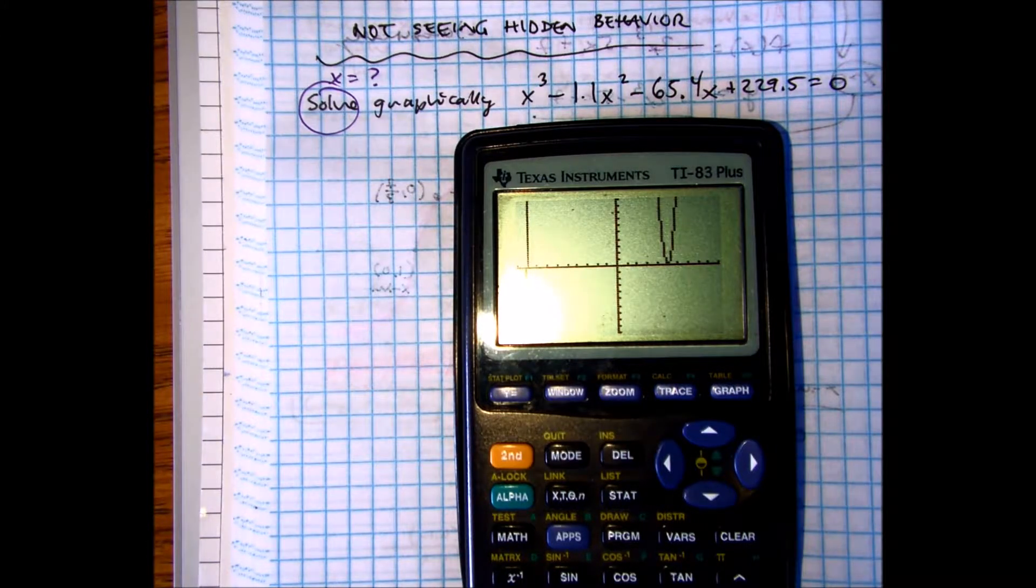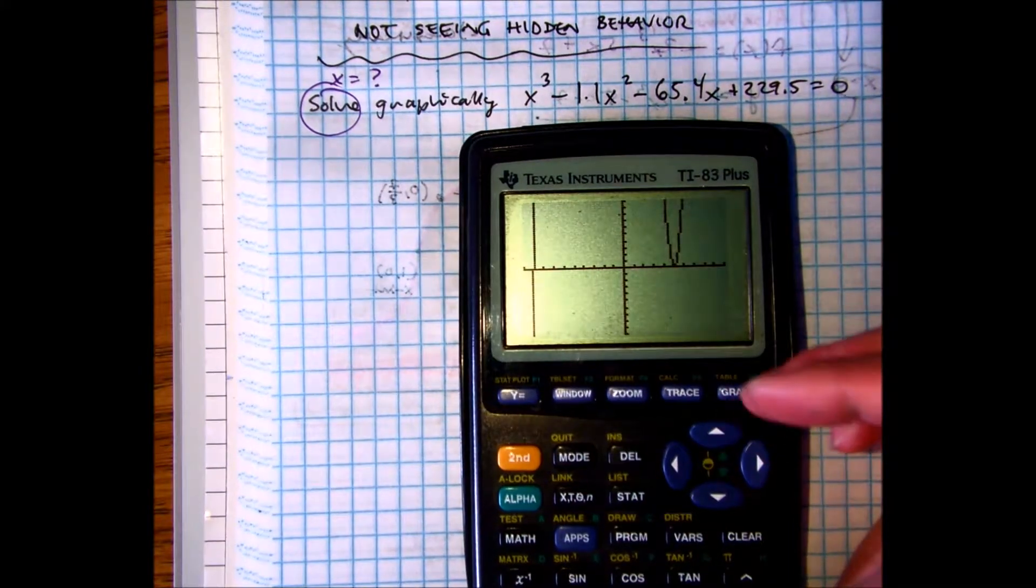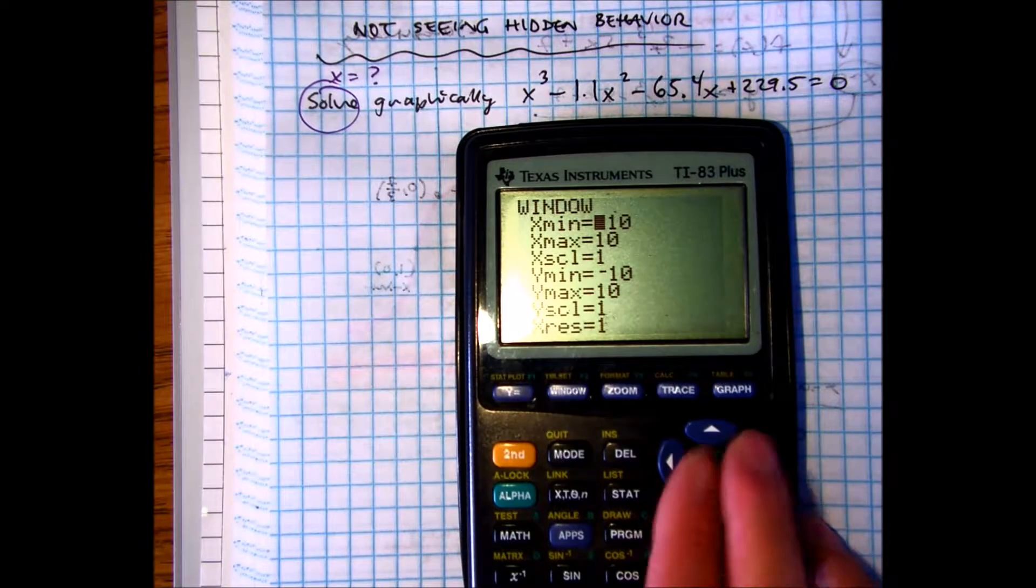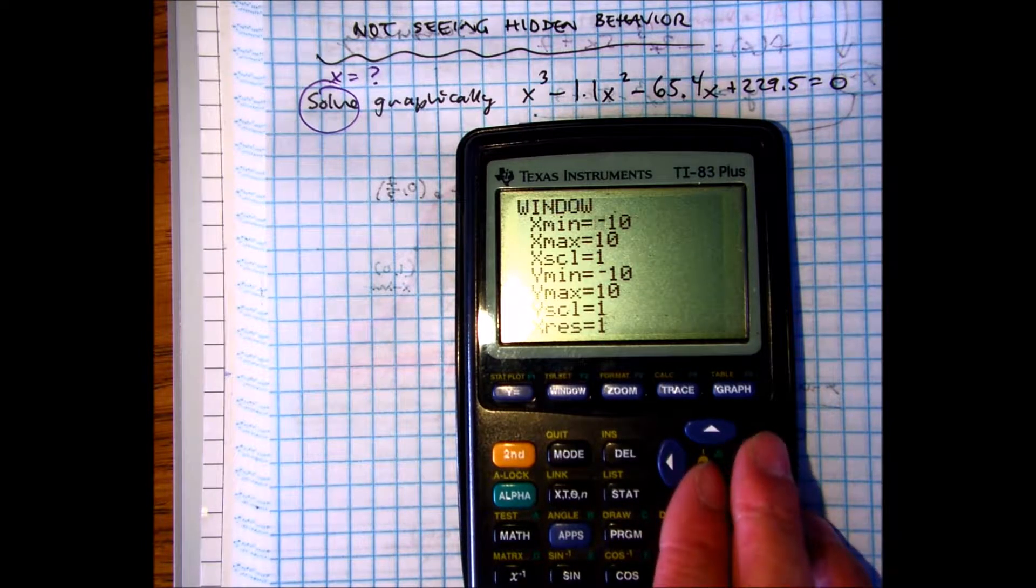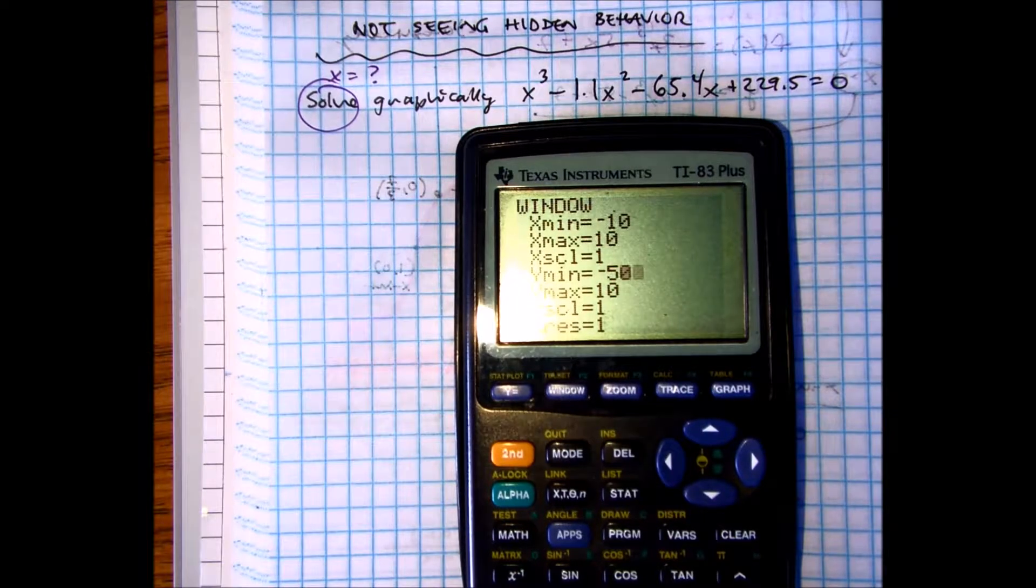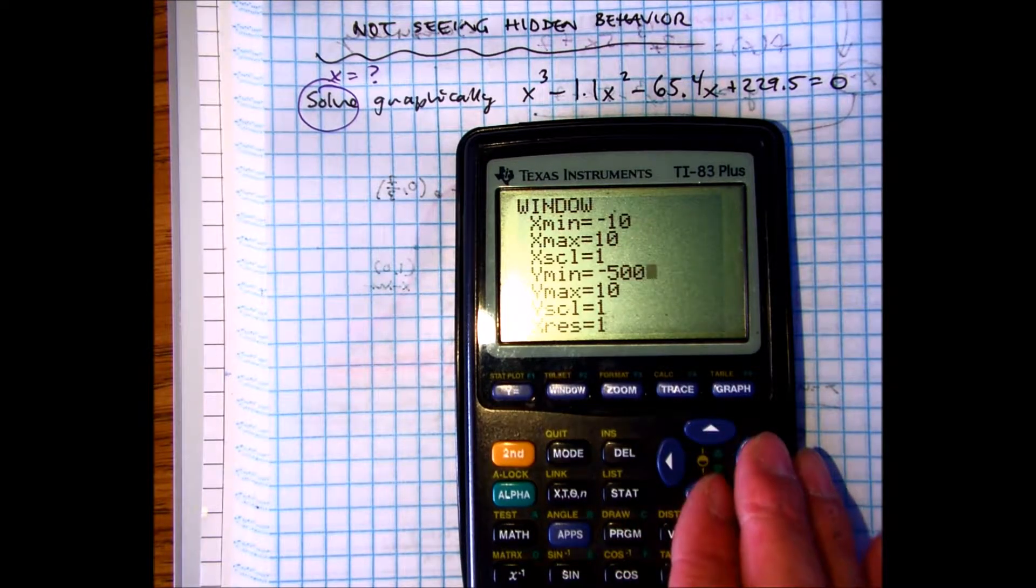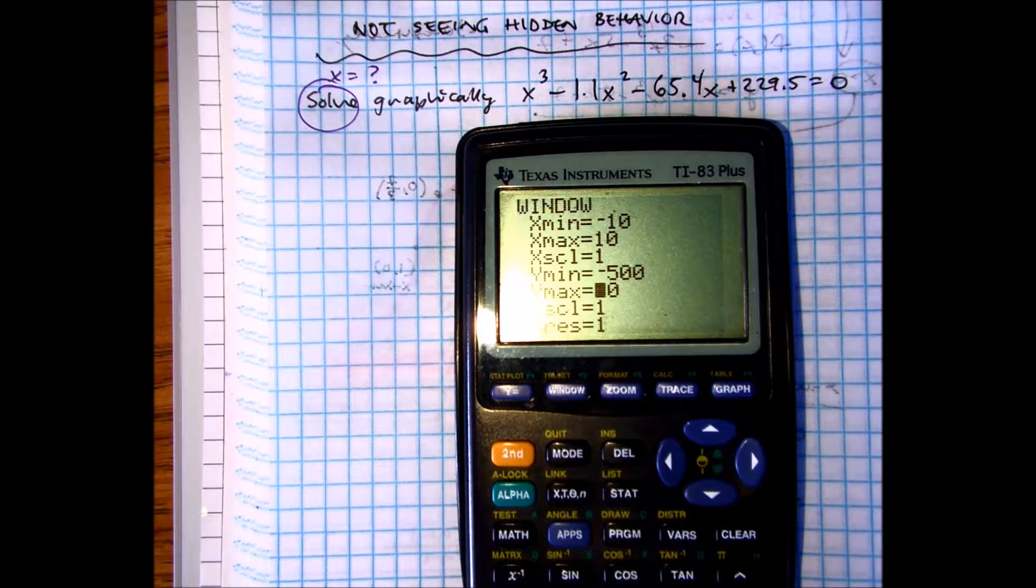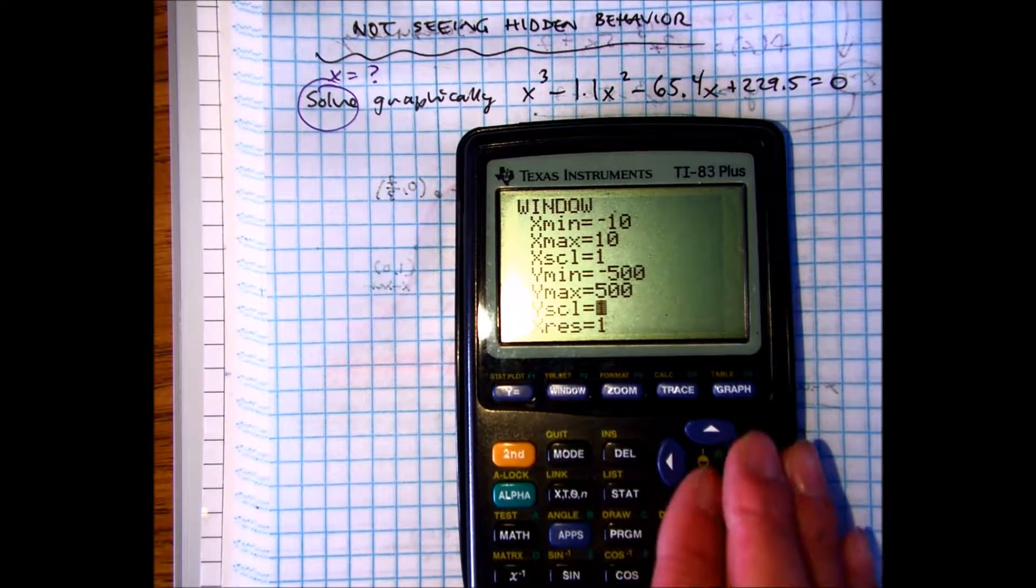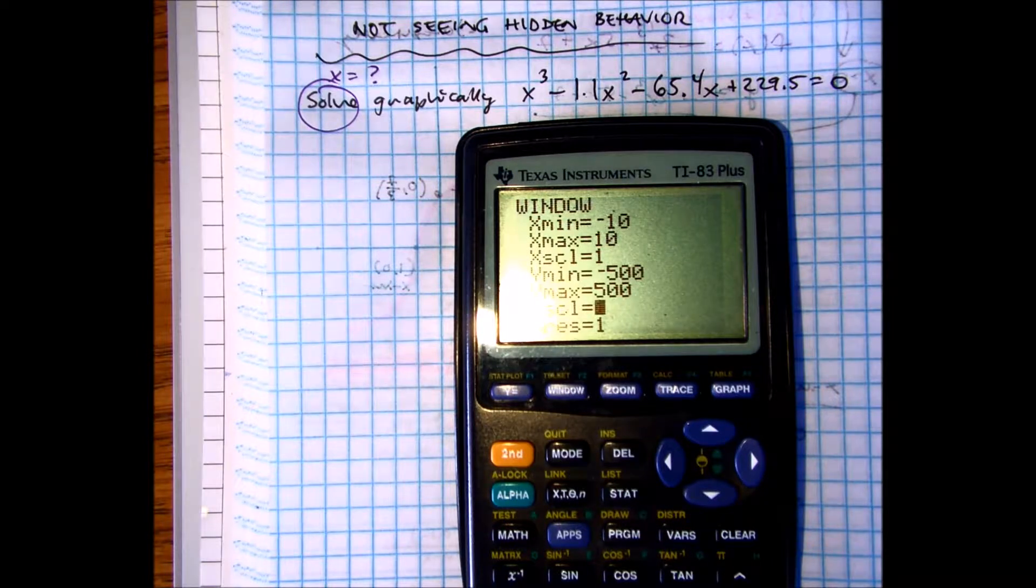Okay, so we have a roller coaster here, a polynomial, and we don't know what it looks like. So if we press window, let's change your y minimum to negative 500 and your y maximum to 500, and the y scale is what you want every tick mark to be, let's just say 100.